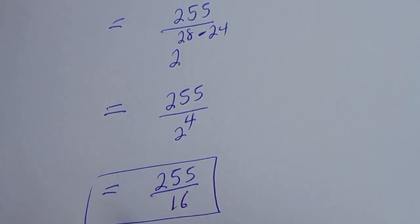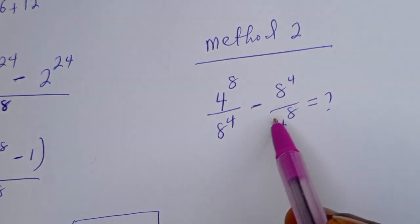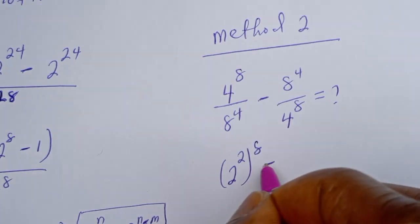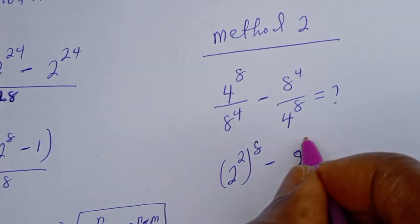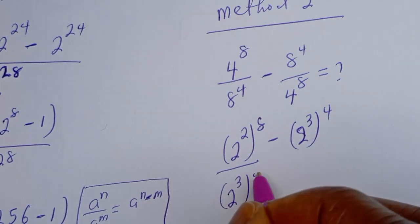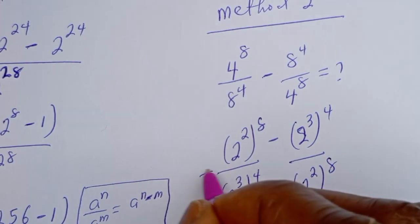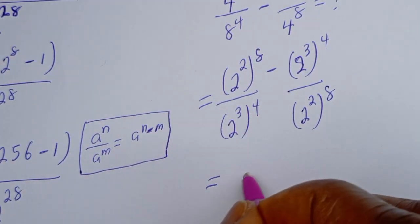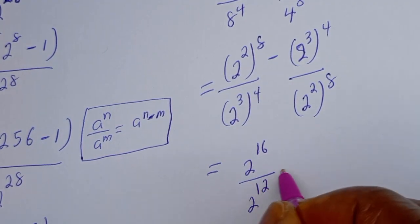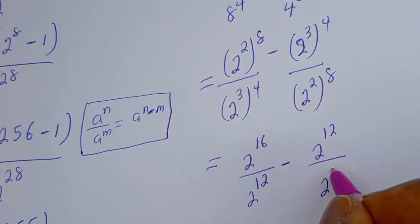Now we can solve this another way. We have 4 to the power of 8 divided by 8 to the power of 4, minus 8 to the power of 4 divided by 4 to the power of 8. Converting to base 2: 2 squared to the power of 8, minus 2 to the power of 3 to the power of 4, over 2 to the power of 3 to the power of 4, divided by 2 to the power of 2 to the power of 8. This gives 2 to the power of 16 over 2 to the power of 12, minus 2 to the power of 12 over 2 to the power of 16.